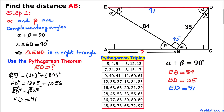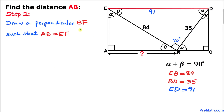Here's another way to calculate ED using Pythagorean triplets. Using the 5-12-13 triplet and multiplying all sides by 7: 5×7=35, 12×7=84, and 13×7=91. So our triplet is 35, 84, and 91.